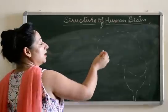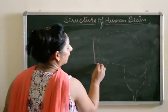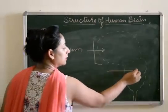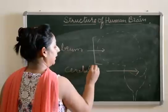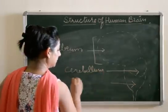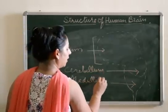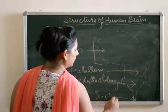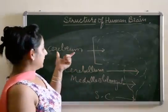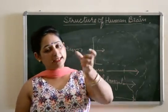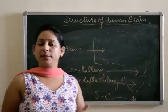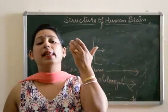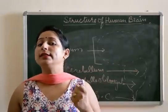Olfactory lobes are just divisions. This largest part of the brain is known as cerebrum, this part is known as cerebellum, and this is medulla oblongata. The tube here is the start of the spinal cord, also known as the brain stem. The olfactory term is always used for the sense of smell — olfactory lobes are the part of the brain that control the sense of smell.